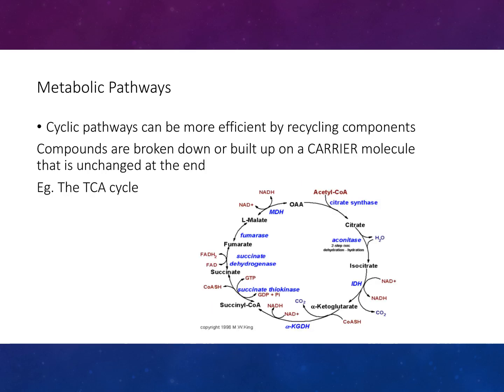Cyclic pathways can be more efficient by cycling components. Compounds are broken down or built up on a carrier molecule that is unchanged at the end — for example, the tricarboxylic acid (TCA) cycle.